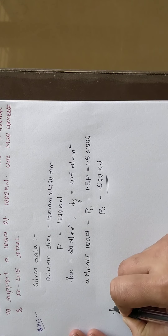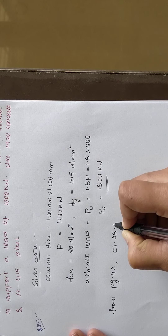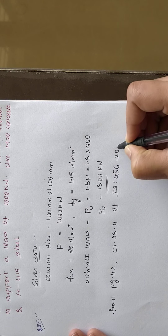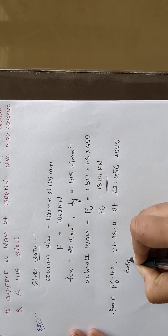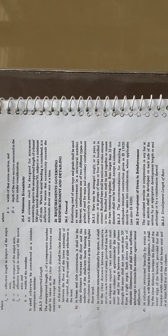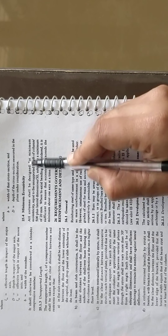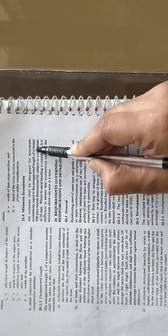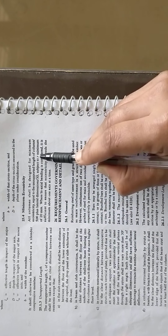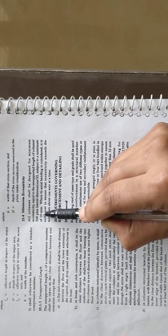From page number 42, clause 25.4 of IS 456:2000, the minimum eccentricity for the column is 20 mm. As per the code, all columns shall be designed for minimum eccentricity equal to unsupported length/500 plus lateral dimension/30, subject to a minimum of 20 mm. So for this column, the minimum eccentricity to provide is 20 mm.